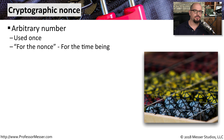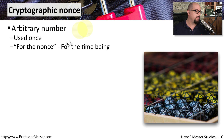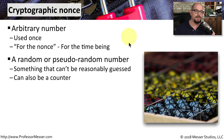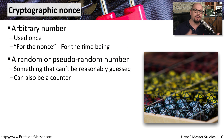One way to provide this randomization is through the use of a cryptographic nonce. A nonce is a number that is arbitrarily chosen. You use it one time, and then you don't use it again. It comes from the term 'for the nonce,' which means for the time being. This would be a random or pseudo-random number — something that you probably would not reasonably guess to be added to this particular algorithm. Some people might even use a counter where the number is constantly incrementing.